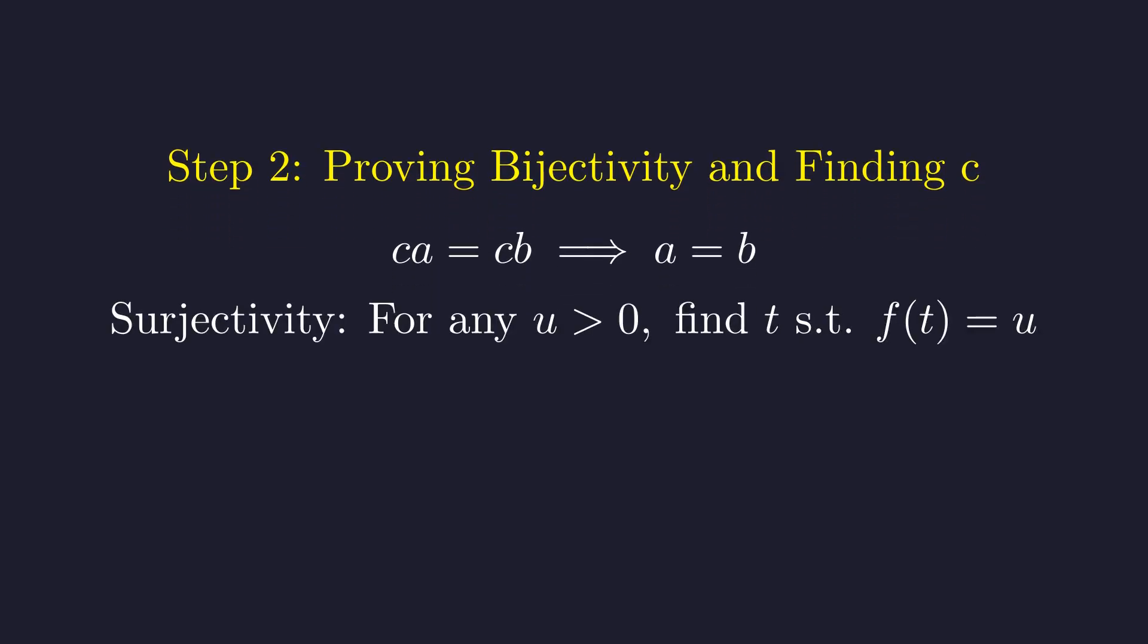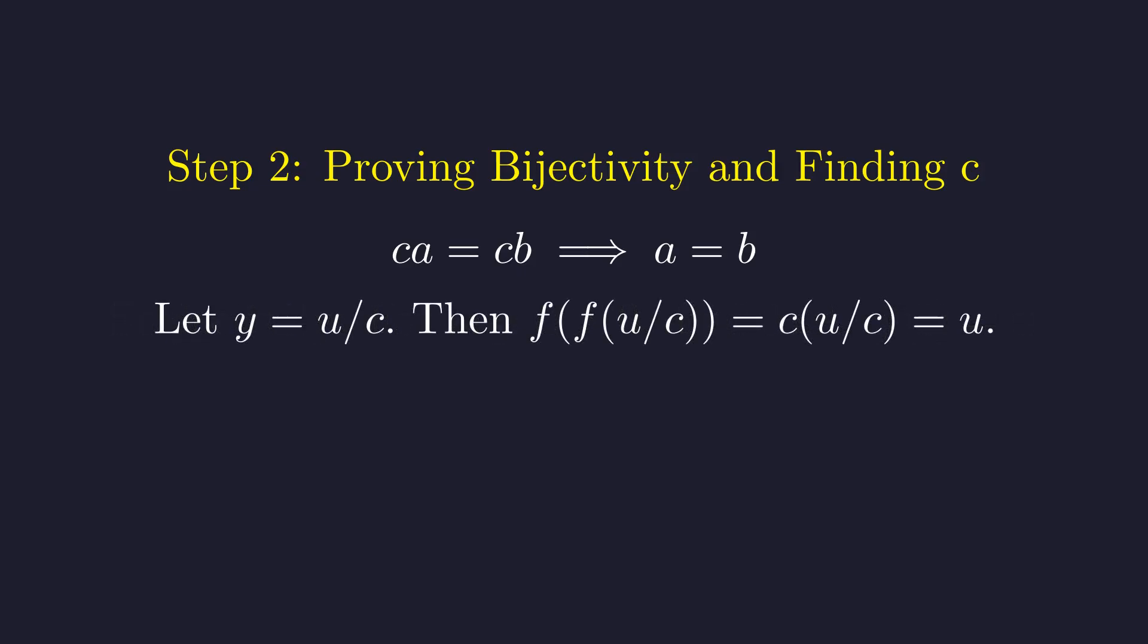Next, to prove surjectivity or onto behavior, we must show that for any positive number u, there exists some t such that f of t equals u. Let's choose y to be u divided by c. Then f of f of u over c equals u. This means we've found our t. It's f of u over c. So the function is surjective.